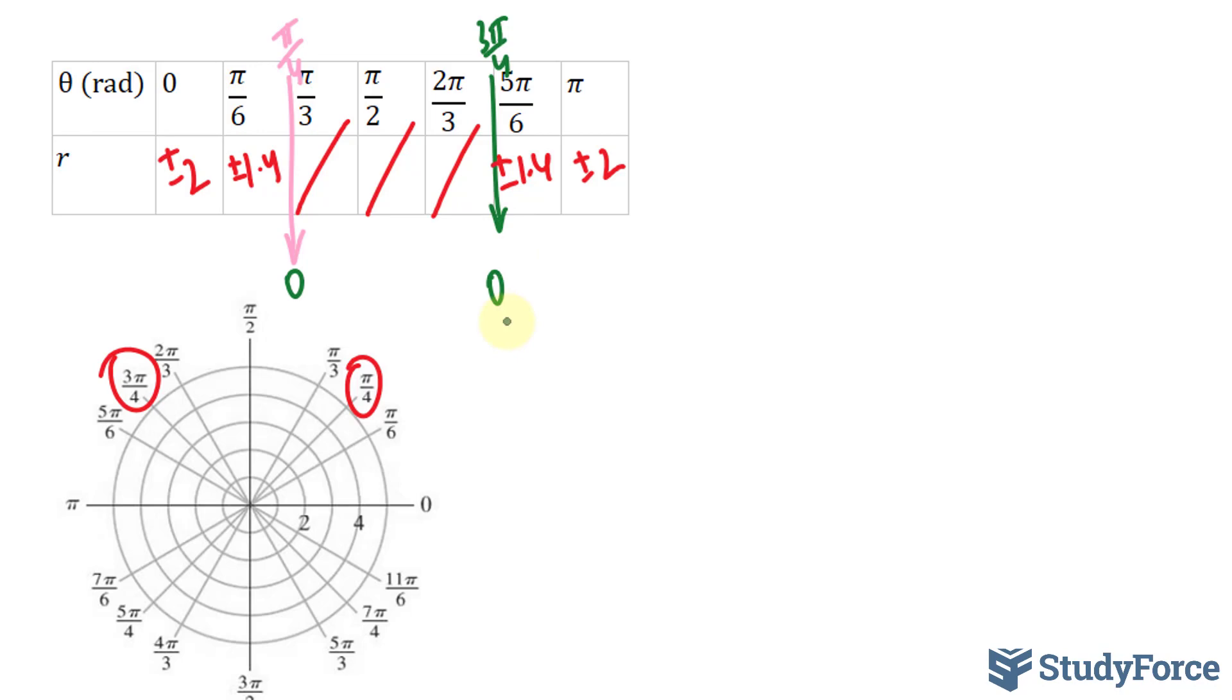The more points you have, the more confident you are when you graph. Starting with this point, we're at 0 and plus minus 2. Remember that a negative radius means that the point is shooting in the opposite direction. So at 0, we have a point over here and a point over here.